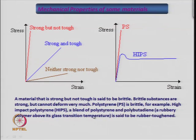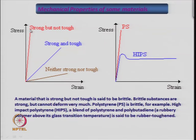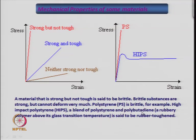If a material is not tough it is called brittle — it breaks easily; brittle substances are strong but cannot deform. A brittle material looks strong but not tough on the stress-strain plot. For example, polystyrene is brittle, whereas high-impact polystyrene (HIPS) — a blend of polystyrene and polybutadiene — is more tough. When you mix polystyrene with the rubbery polybutadiene, the material becomes strong as well as tough; this is called rubber toughening.